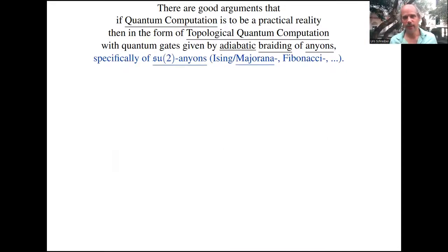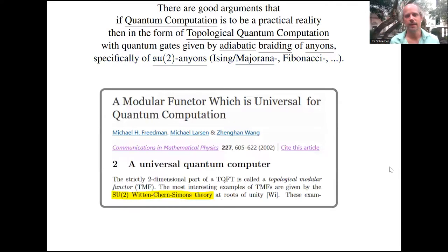Now, if you actually look into how to implement this concretely, it turns out you need what is called Chern-Simons theory, or the Wess-Zumino-Witten model.